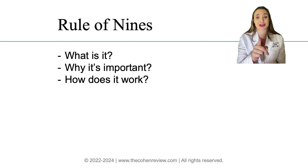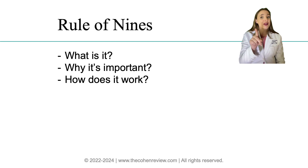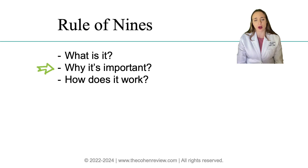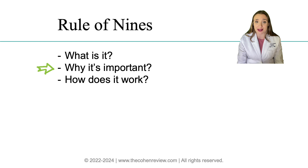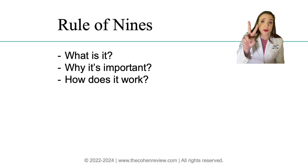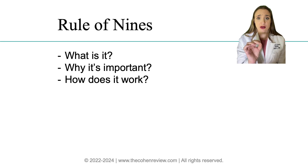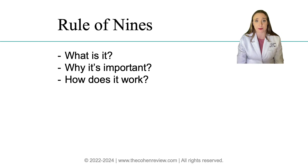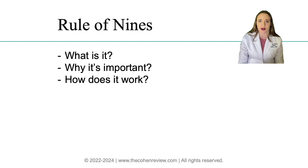We have an entire lecture focusing on shock, so we won't go over that topic in detail here. Why is the rule of nines important? Consider this: if a person has burns on 10% of the body, they should be taken to a specialized burn center. According to the NIH, burns covering 20% of the body require substantial intravenous fluids, and doctors will use the estimated area of the burn to decide how much fluid is needed. Burns covering more than 30% of the body can be fatal.